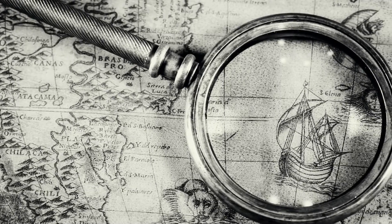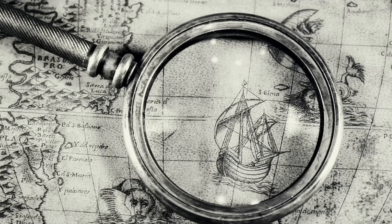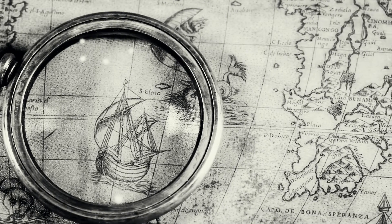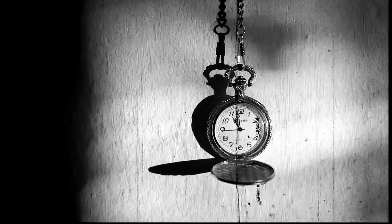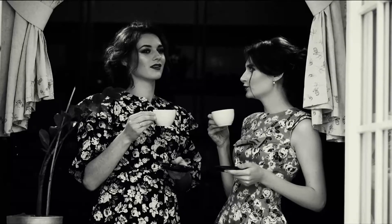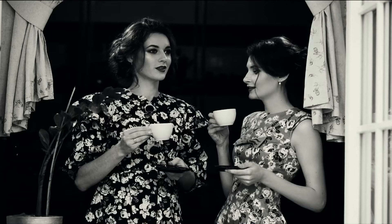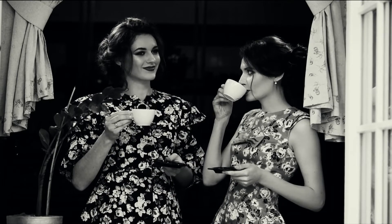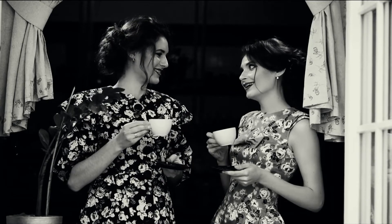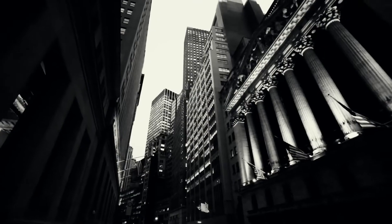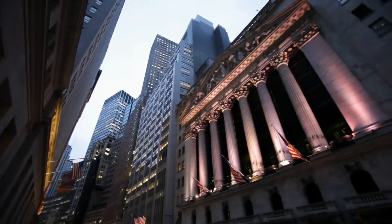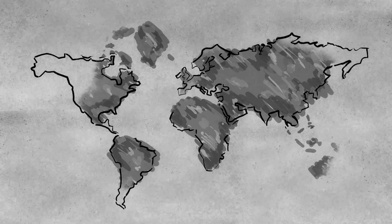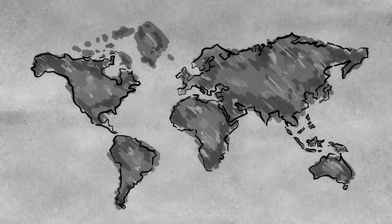The stock markets came into existence when countries began trading with each other. Its existence in one form or the other dates back to the 1500s. In those days, no physical markets existed and buyers and sellers met at coffee houses to exchange goods and services. These later evolved over the course of hundreds of years into the modern stock market we see today.